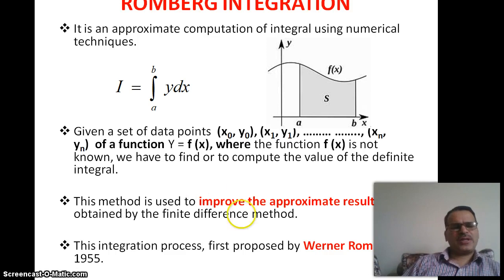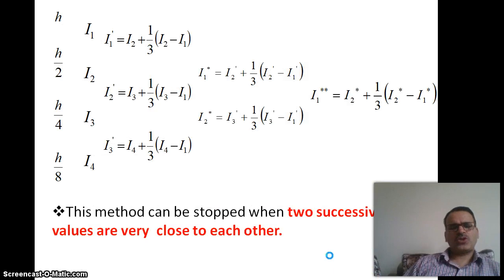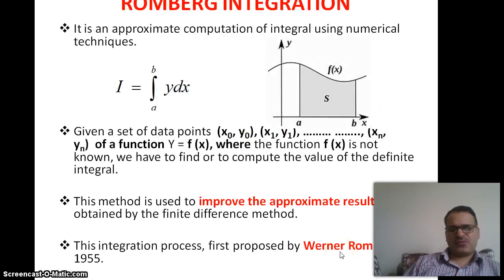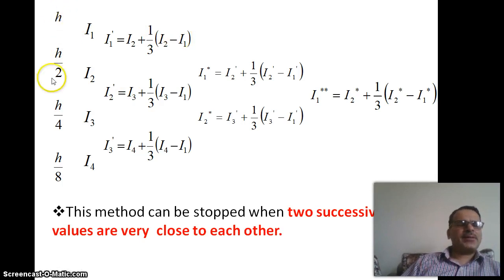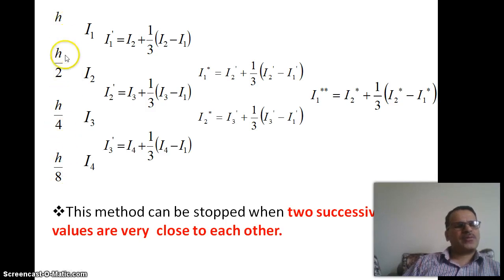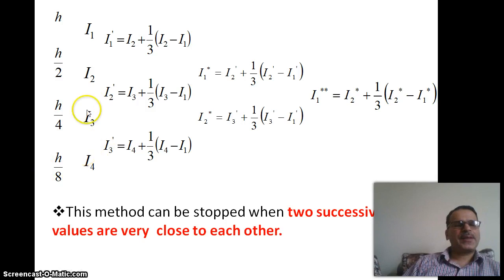This integration process was first proposed by Werner Romberg in 1955. In Romberg integration, we make a forward difference table. We write intervals h, h/2, h/4, h/8 — we denote h as I1, h/2 as I2, h/4 as I3, and h/8 as I4.